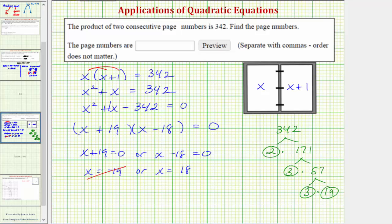So the first page number is x, so we have x equals 18. The second page number is x plus 1, which is equal to 18 plus 1, which equals 19. So the two consecutive page numbers that have a product of 342 are 18 and 19. I hope you found this helpful.